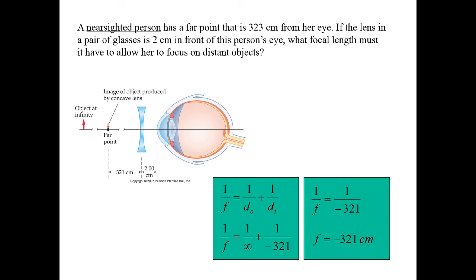The focal length is negative and almost equal to the far point — there's just a small correction for the distance between the person's eye and the lens. The idea is that we want to take an object at infinity and form an image at the far point. We do that with a diverging lens with a negative focal length very close to the far point distance, with a possible small correction based on the distance from the lens to the eye.